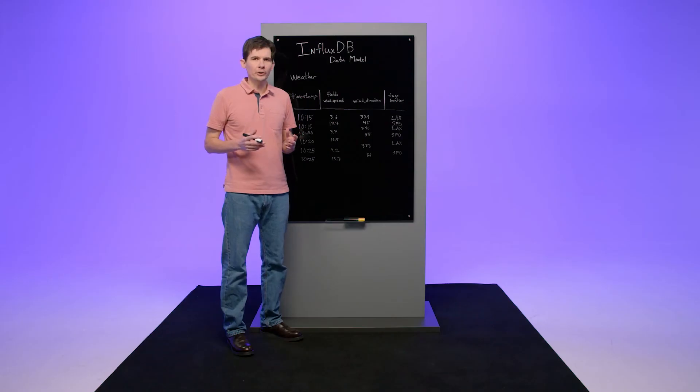All data within a measurement has timestamp, fields, and tags. Let's look at this weather measurement, for example. We have a couple of weather stations, and they collect wind speed in knots and wind direction in degrees every five minutes.